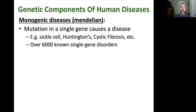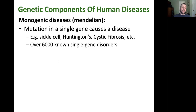I want to start by explaining some of the genetic components of human diseases. Human genetic diseases come in two main types. The first are called monogenic diseases — single gene diseases, otherwise known as Mendelian diseases. These are the kind of things we've already looked at when we were discussing Mendelian genetics: a single gene that when mutated can cause a single disease.